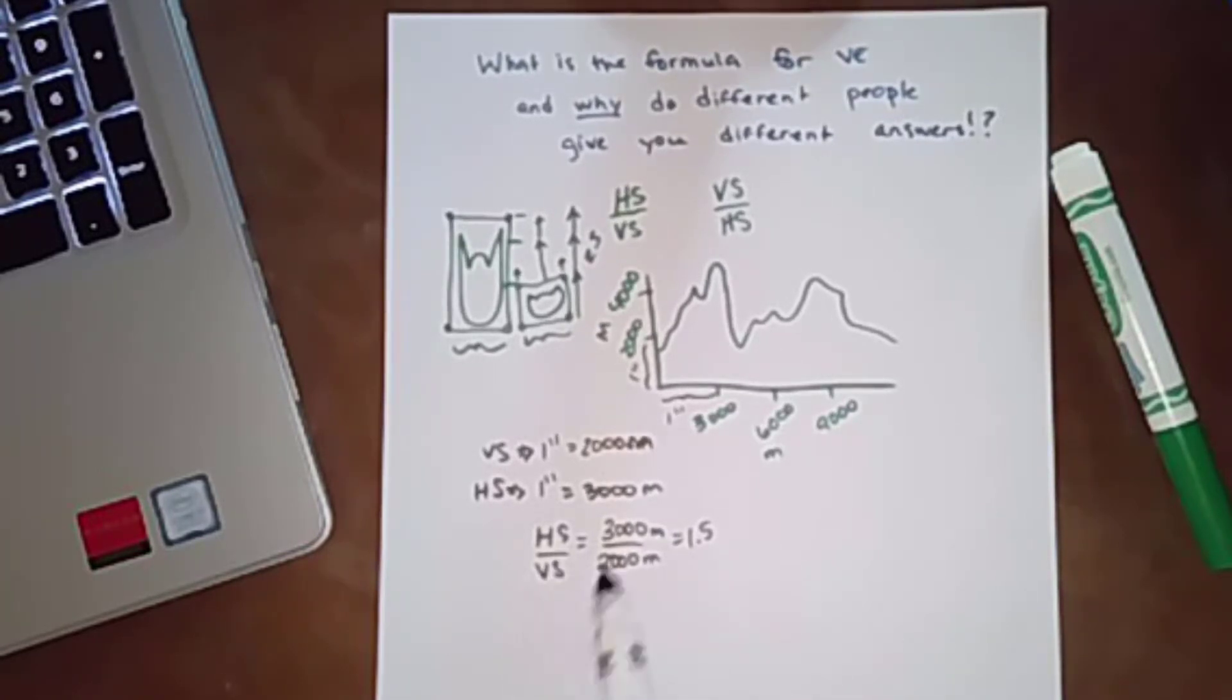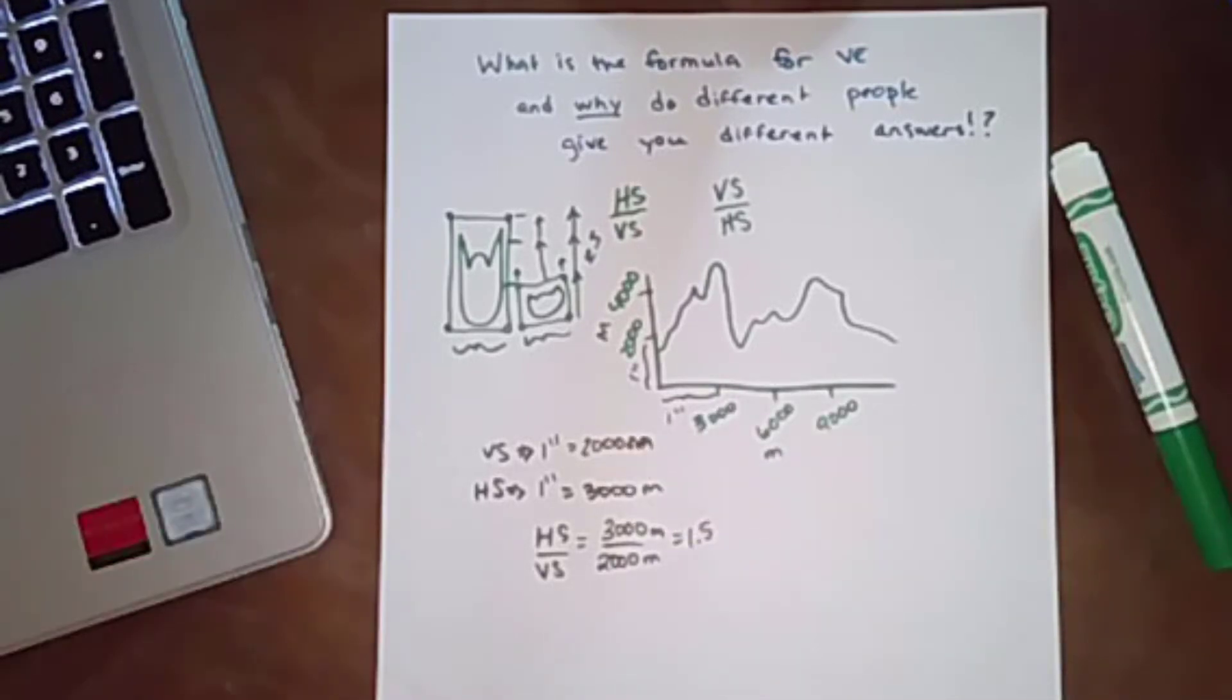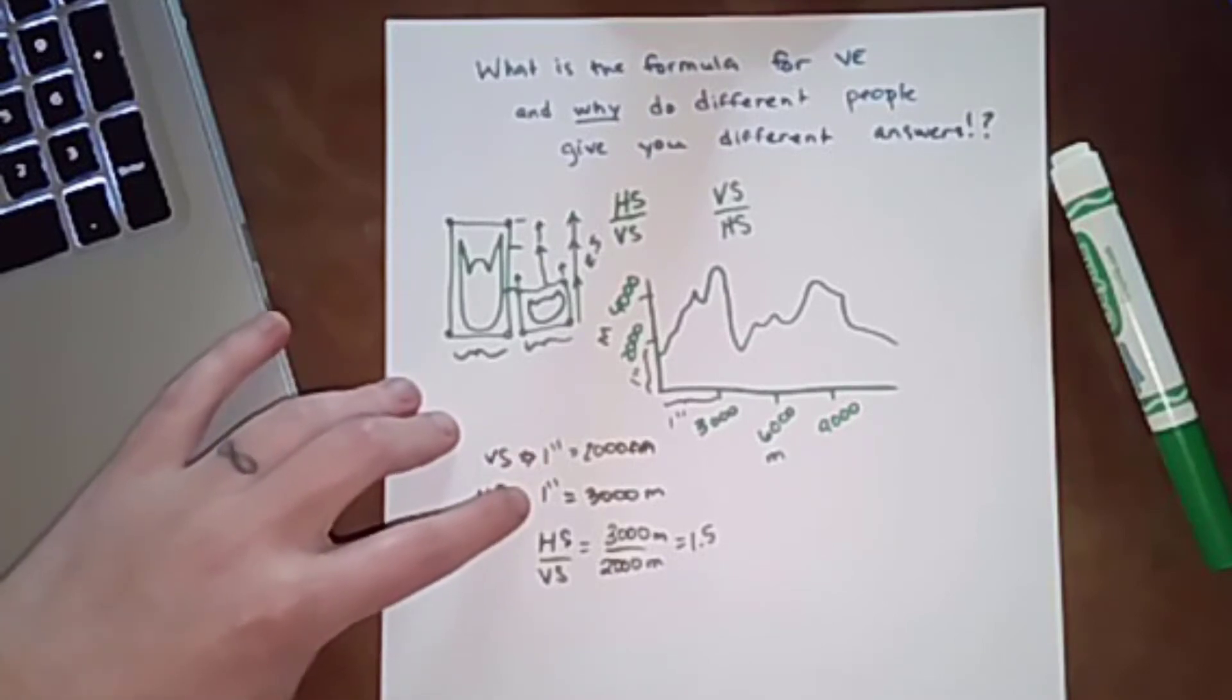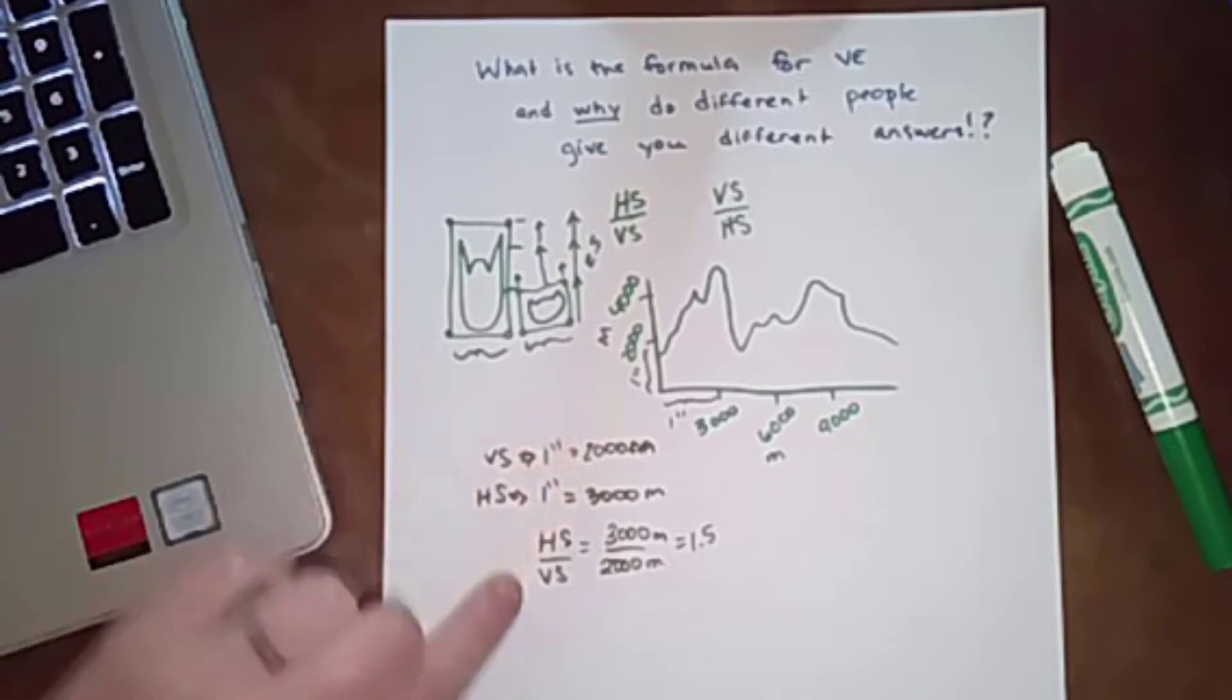So here we've got horizontal scale divided by vertical scale, and basically we have done the work on the forehand to get these map distances to be the same, and then for better or worse we've kind of ignored them and just divided the real-world distances.